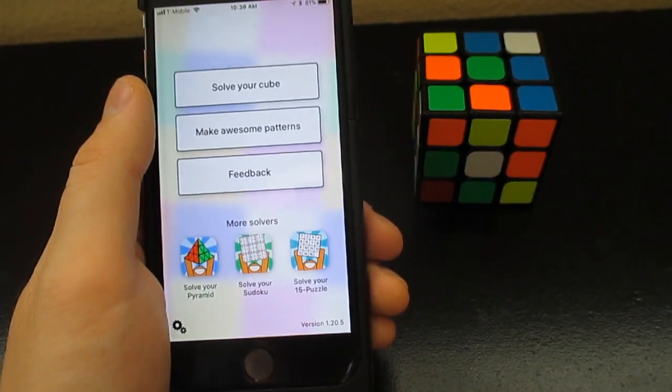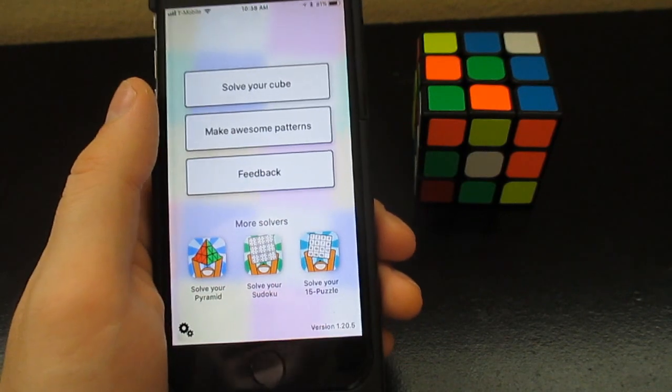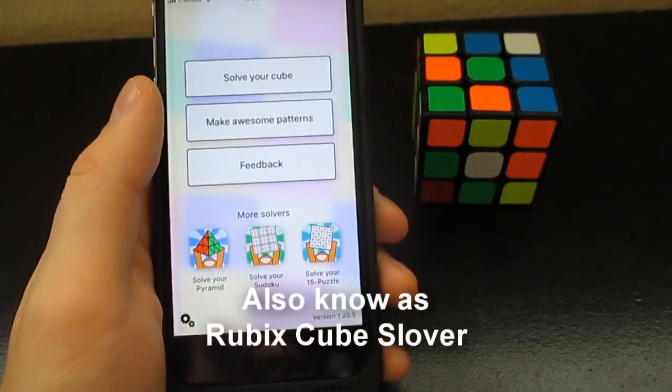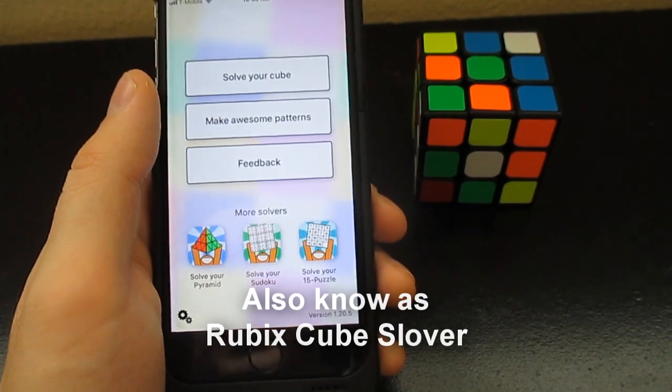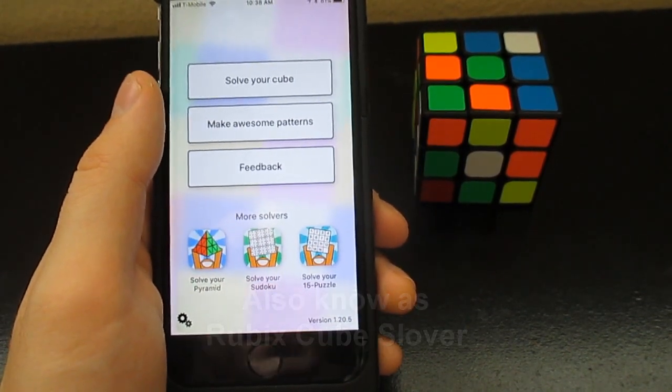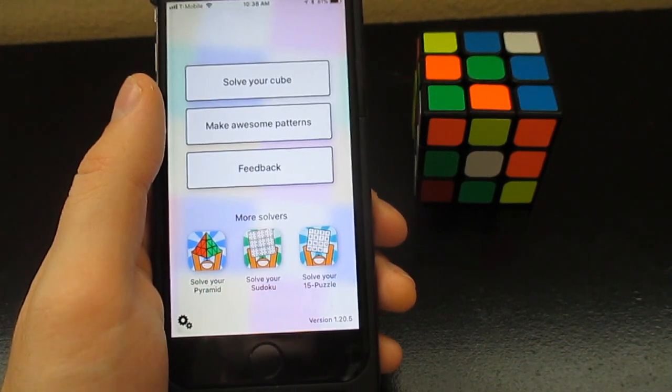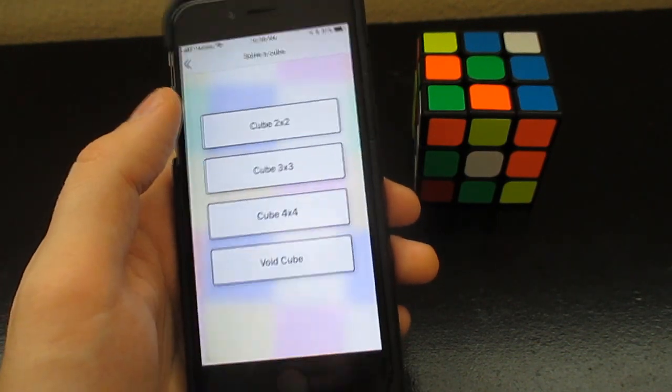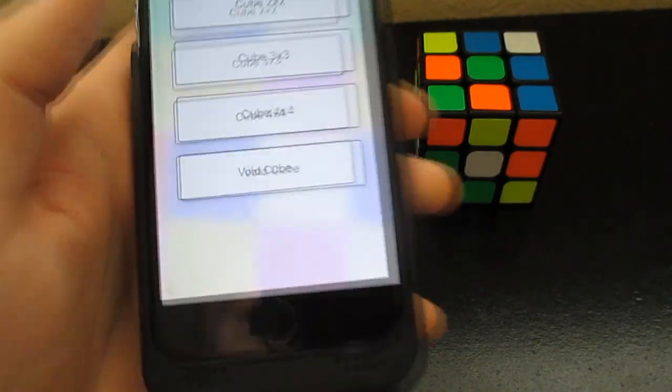What's up guys, so I have a really cool app called Solve It, and it's for your 2x2 cube, your 3x3, and 4x4, and also for your void cube if you have a void cube.